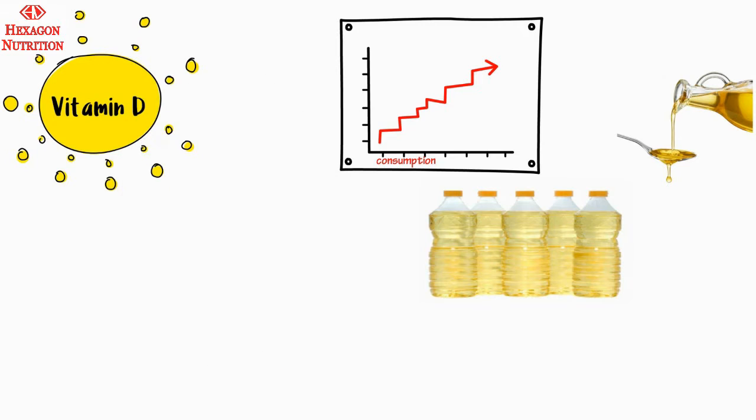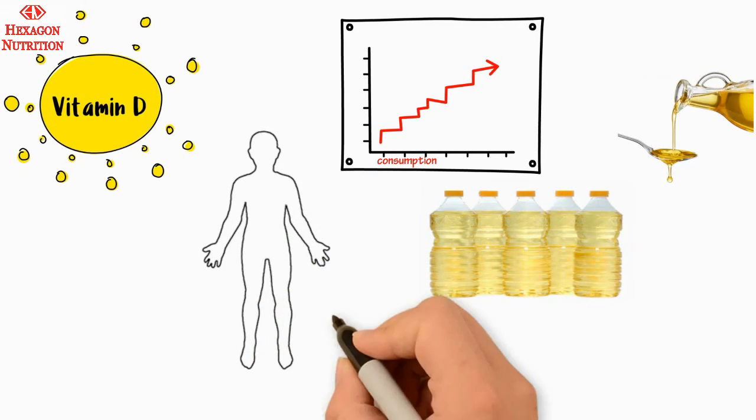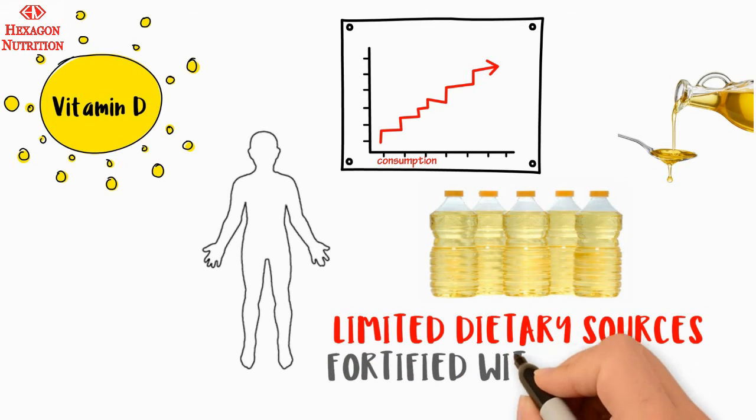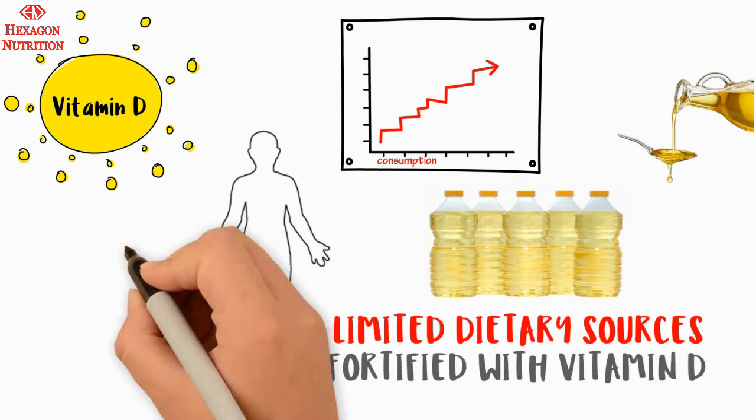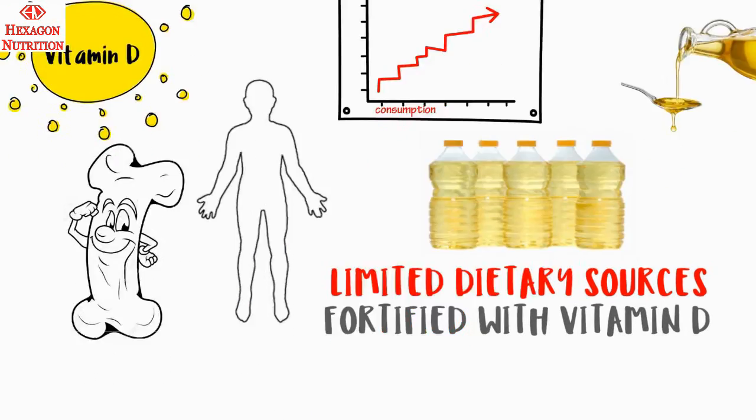Vitamin D, also known as the sunshine vitamin, is a very critical nutrient that has to be predominantly synthesized by the body as the dietary sources for the nutrient is very limited. Edible oil could be fortified with vitamin D and serve as an effective dietary source. Vitamin D is essential to maintain optimum bone health.